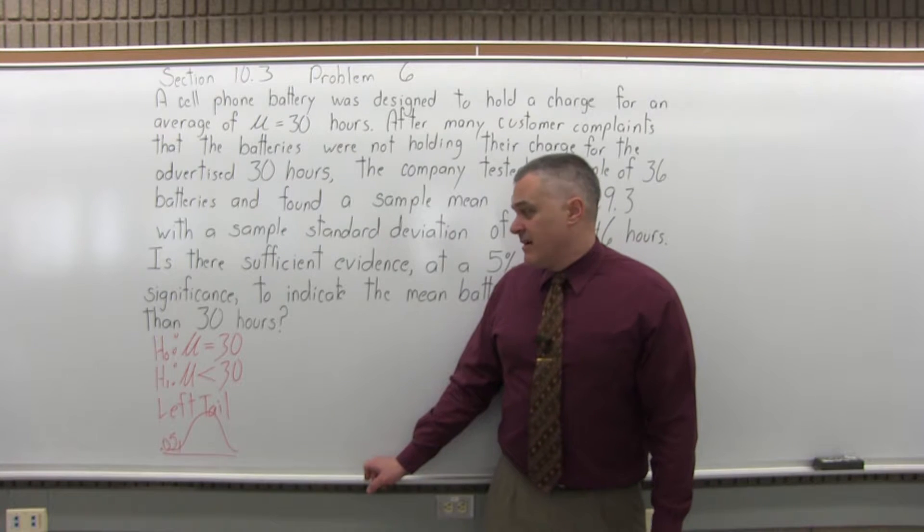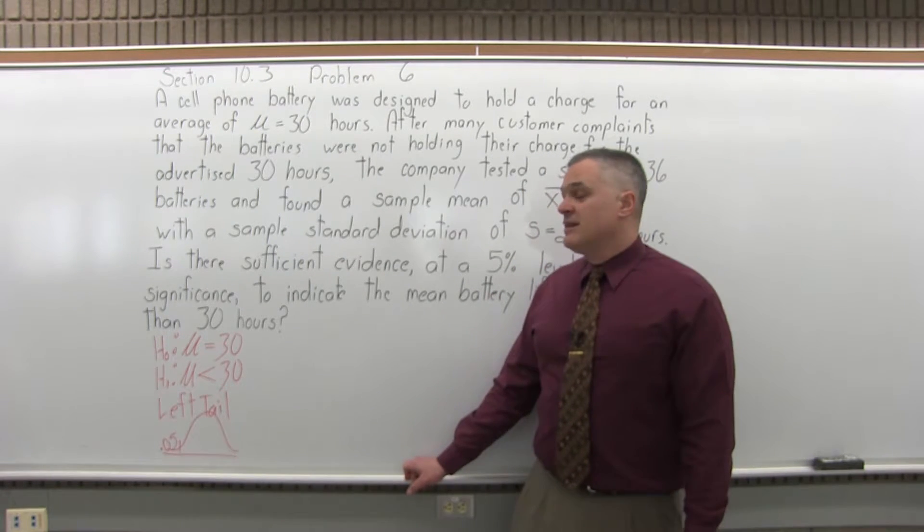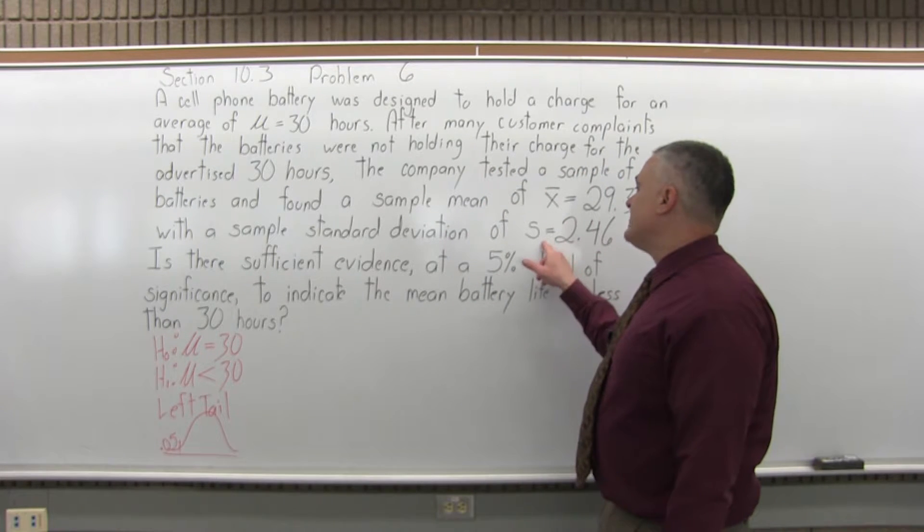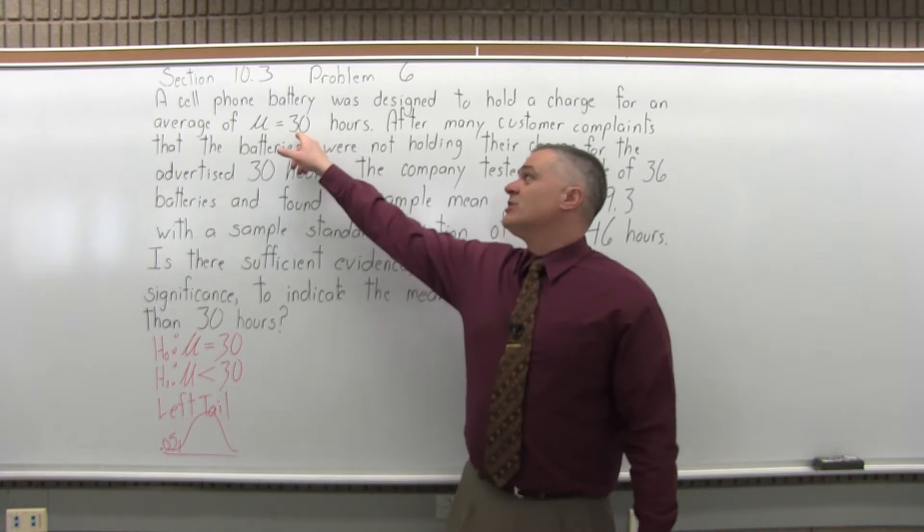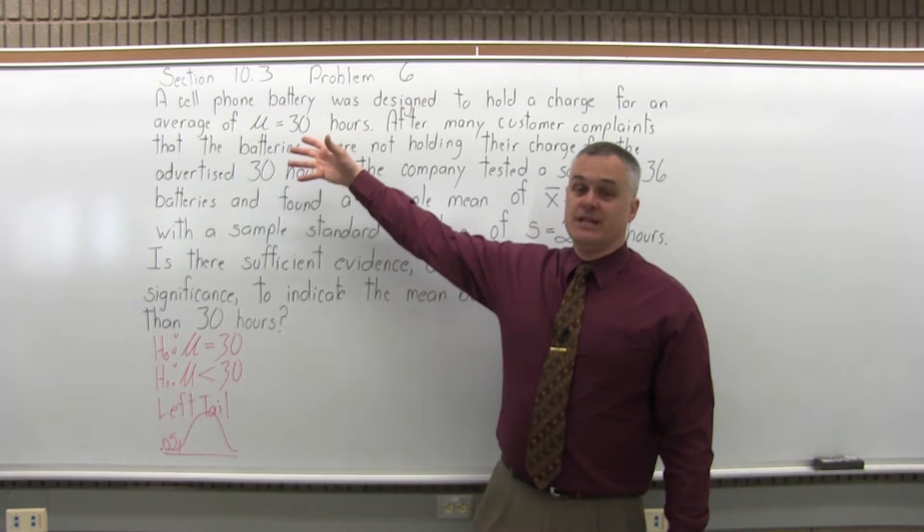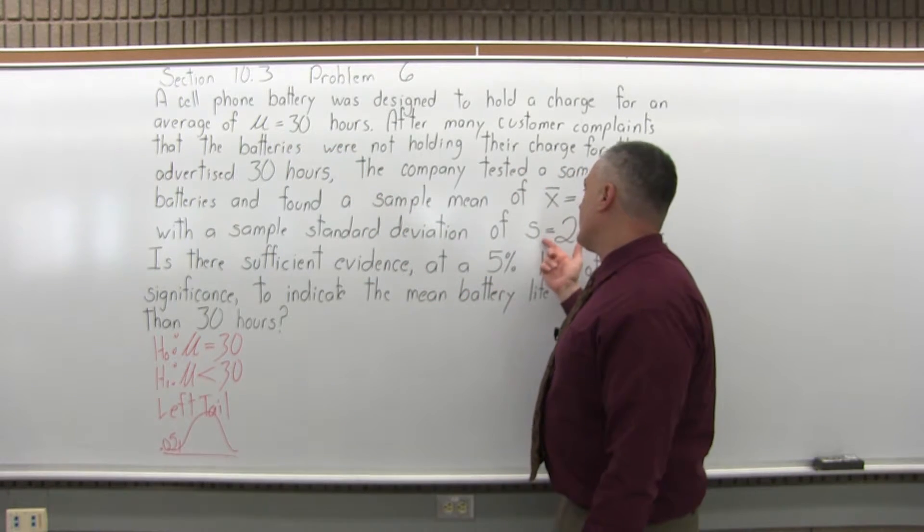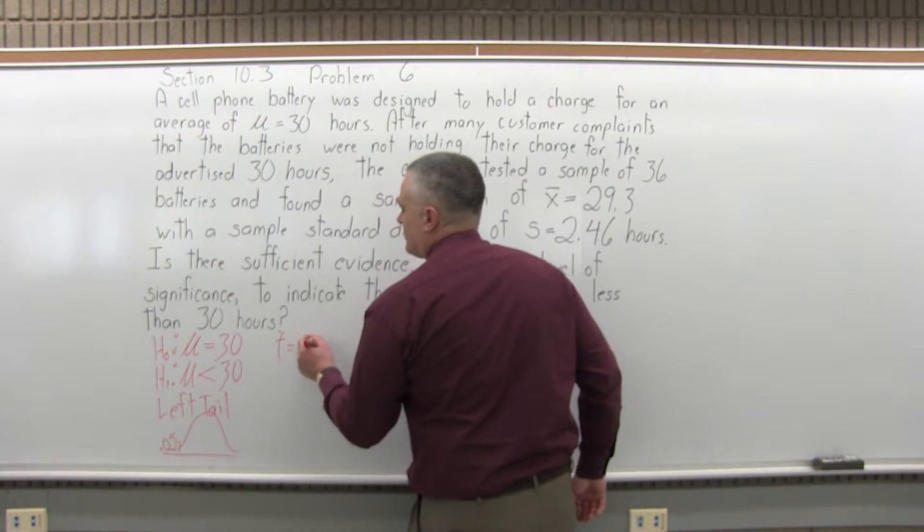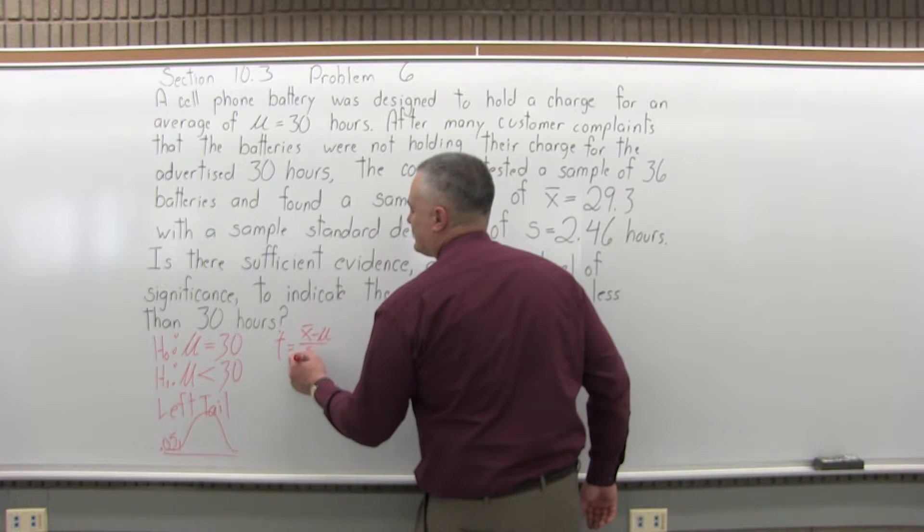So the next step, step four, is to calculate the value for t. Now it's t that I'm calculating as opposed to z because I only know the standard deviation of my sample. So if I knew the standard deviation of the population, I would calculate z. Very similar calculation, but this is more realistic. I know the standard deviation of the sample.